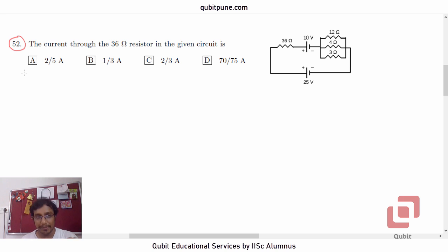This MCQ is very simple. The current through the 36 ohm resistor in the given circuit is: 2 by 5, 1 by 3, 2 by 3, or 70 by 75 amperes.